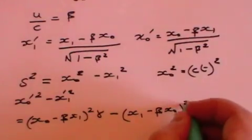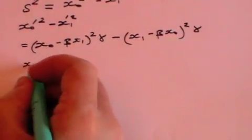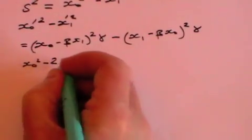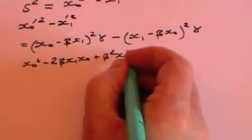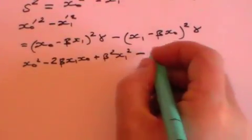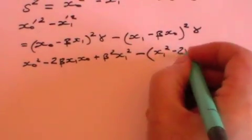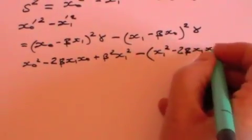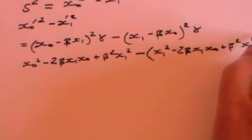And that, if you multiply it all out, comes to the following: X0 squared minus 2 beta X1 X0 plus beta squared X1 squared minus bracket X1 squared minus 2 beta X1 X0 plus beta squared X0 squared all over 1 minus beta squared.